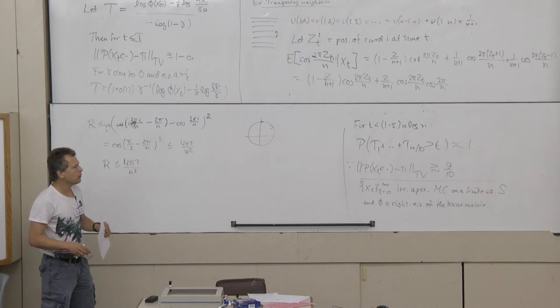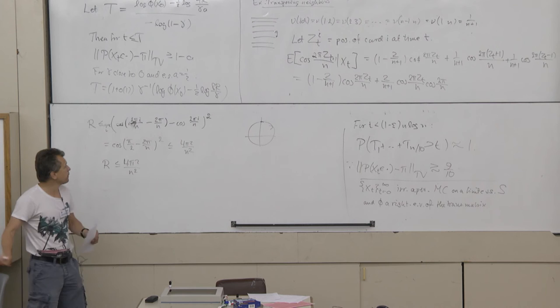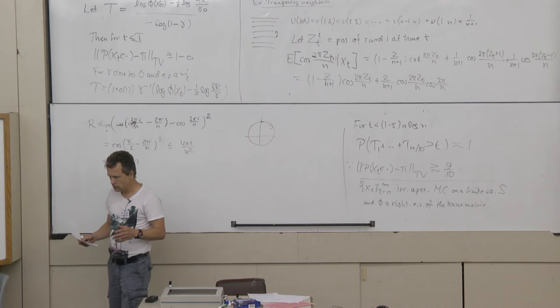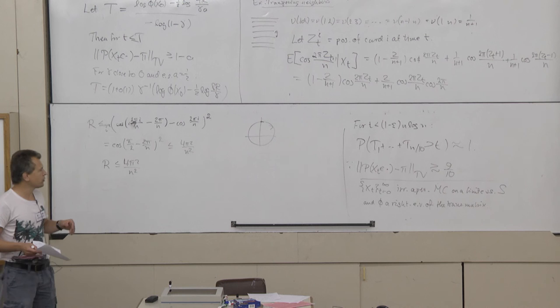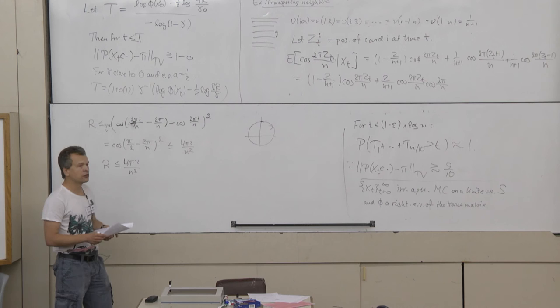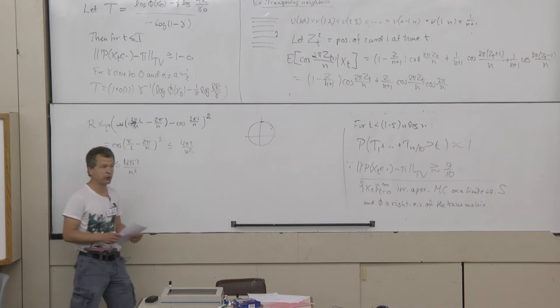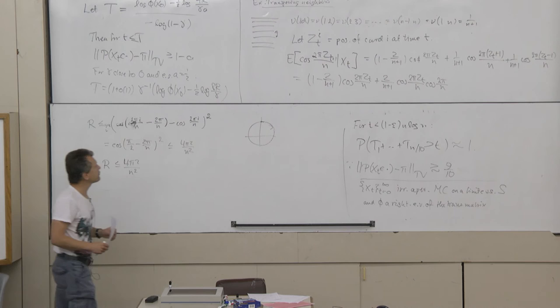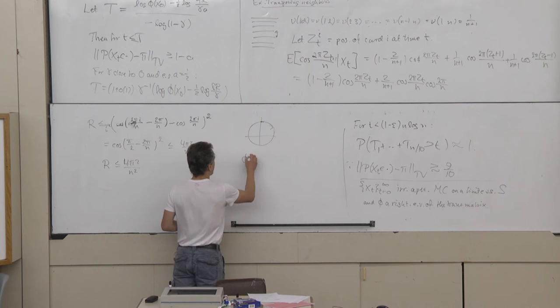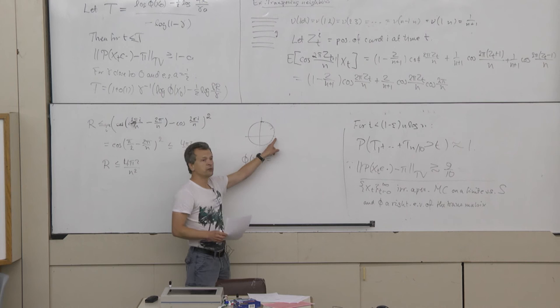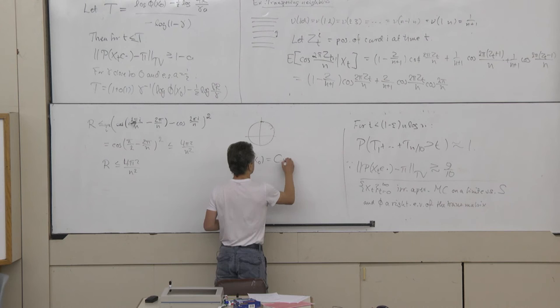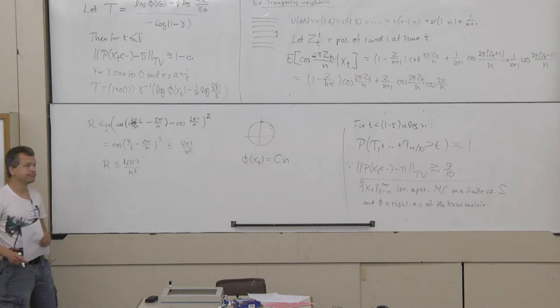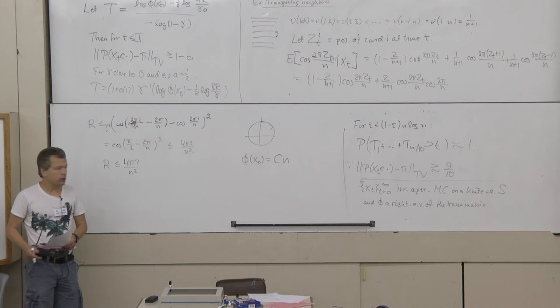We have R ≤ 4π²/N² and gamma = 4π²/N³. We also need the starting value of phi. Since we're doing a random walk on a group, the starting position doesn't matter for the mixing time, so I can start with all counted cards on the right-hand side to maximize phi(X_0). With each card contributing of order 1, we get phi(X_0) of order N.